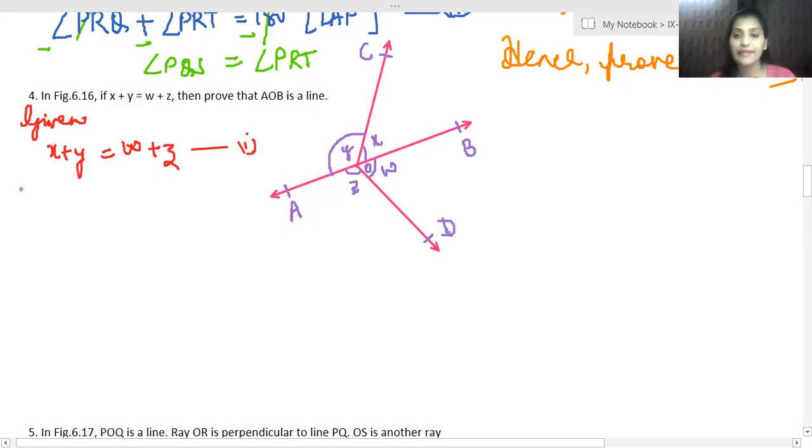Now you cannot use here, what can you do? We will write x plus y is equal to 180 degrees, w plus z is equal to 180 degrees. We cannot write this yet.